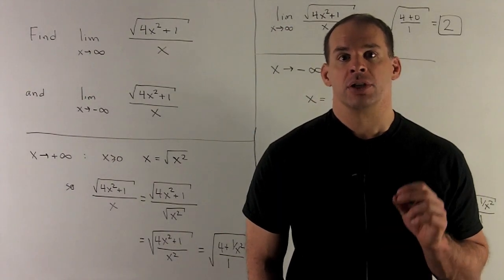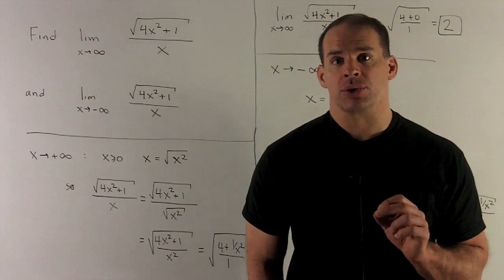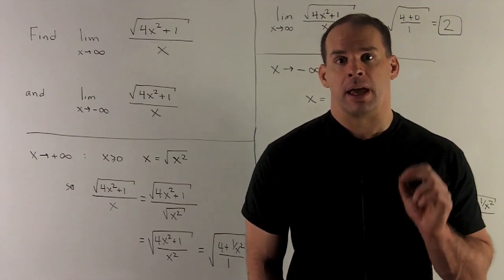Find the limit of the function, square root of 4x plus 1 over x, as x goes to plus infinity and minus infinity.